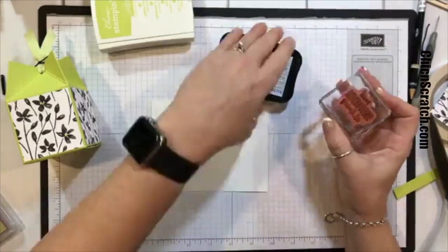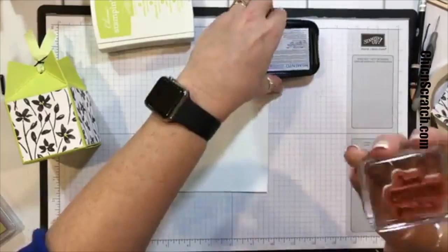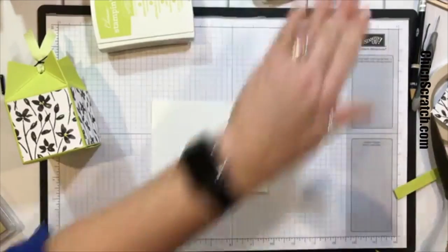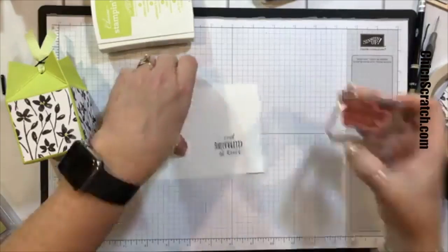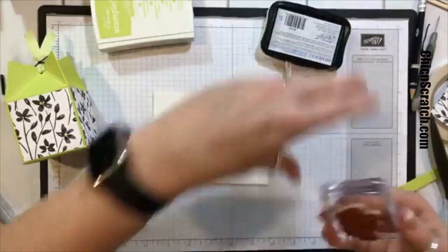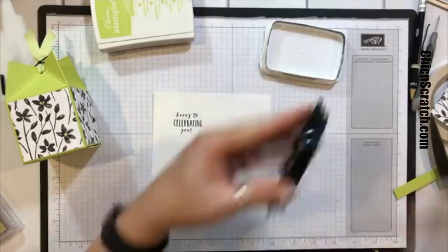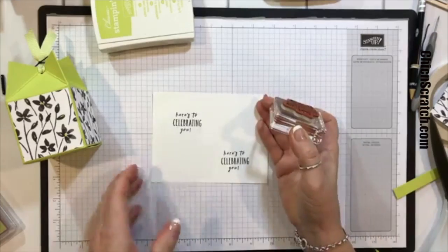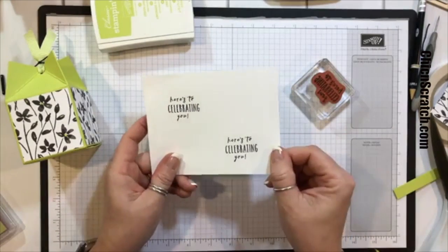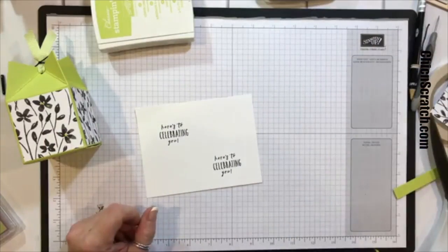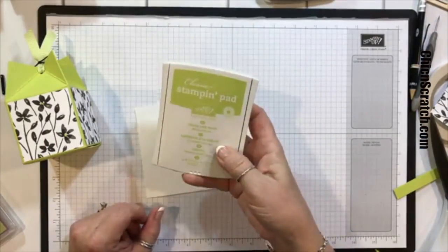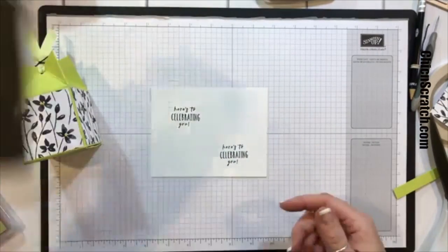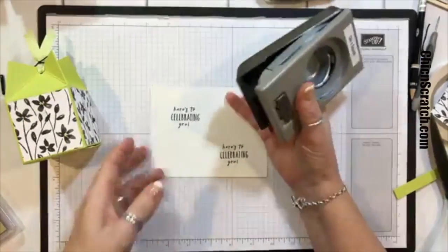By the way, did y'all catch yesterday when I went live for the Fast Fuse? I whipped out the old StazOn ink pad and I didn't even catch it until today that I used something that we don't even carry anymore. That's upside down, I'm going to re-stamp it again just so I can see what I'm doing. I'm going to cut this out with the 1 and three quarter circle punch.